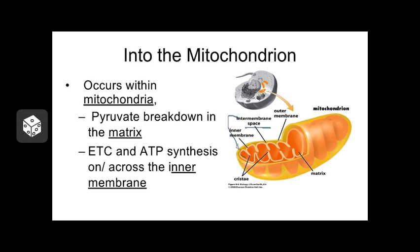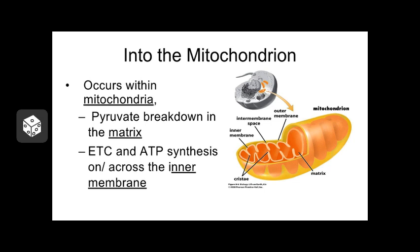The last part of the mitochondrion you need to know about is called the matrix — the liquid in the very center inside the inner membrane. Regarding cellular respiration, we need to take our two pyruvate molecules all the way inside the mitochondrion into the matrix. Notice that to do that, we have to go through two membranes: the outer and the inner. Because pyruvate is kind of large, it needs to be actively transported into the mitochondrion twice to get into the matrix. That will actually cost us a little ATP, but it's worth it — we're going to make a lot of ATP.